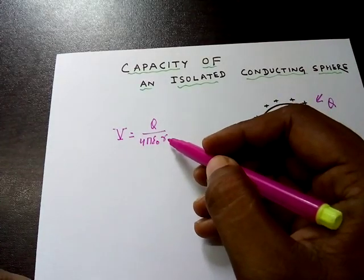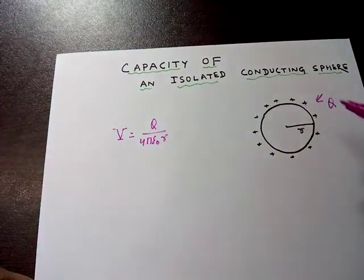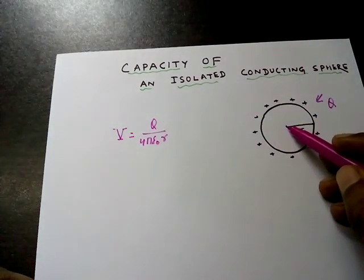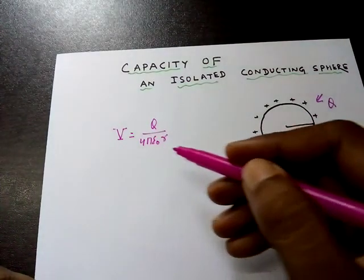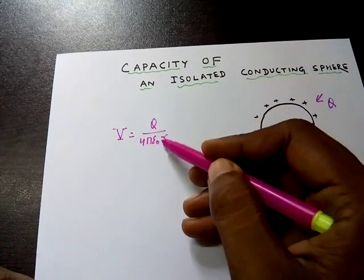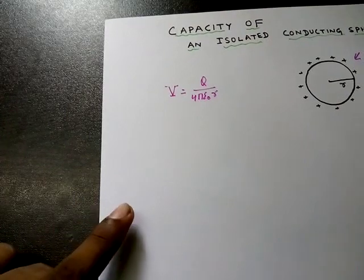At a point which is distant R from any charge Q, at a distance R, that is on the surface, the common potential will be equal to Q by 4πε₀R.